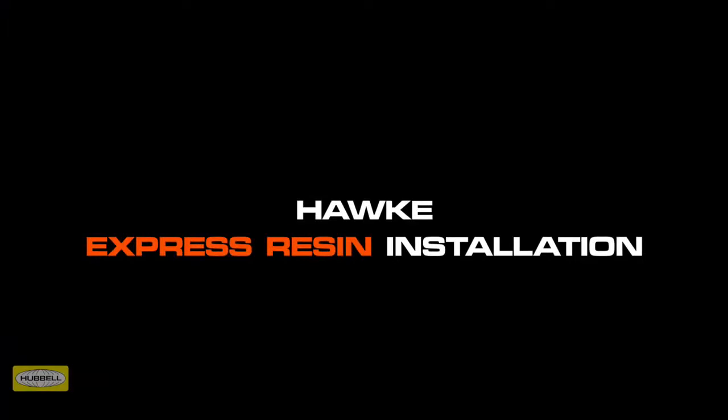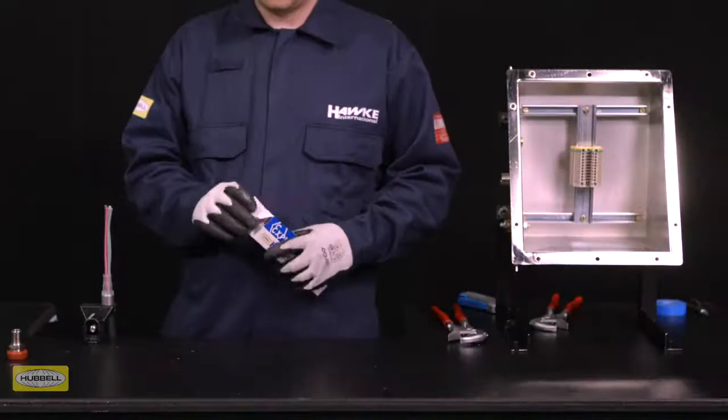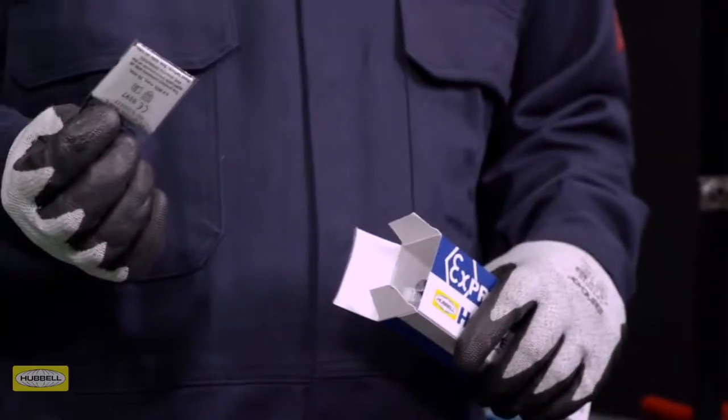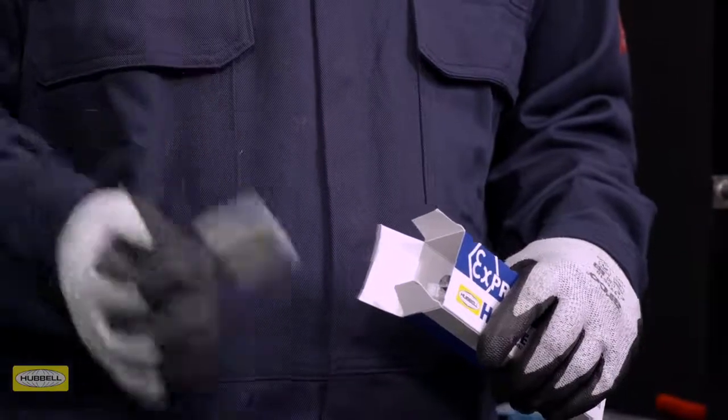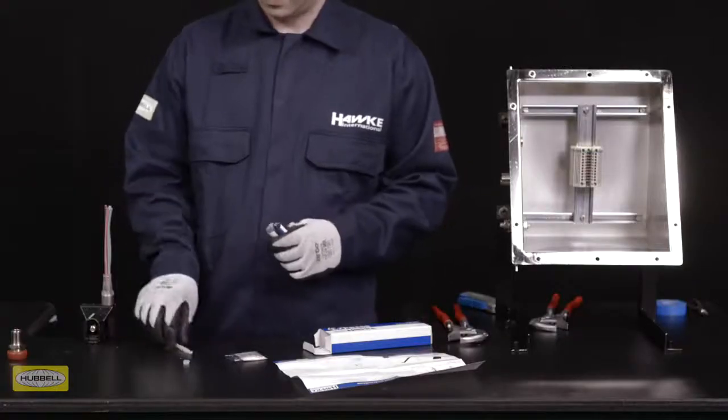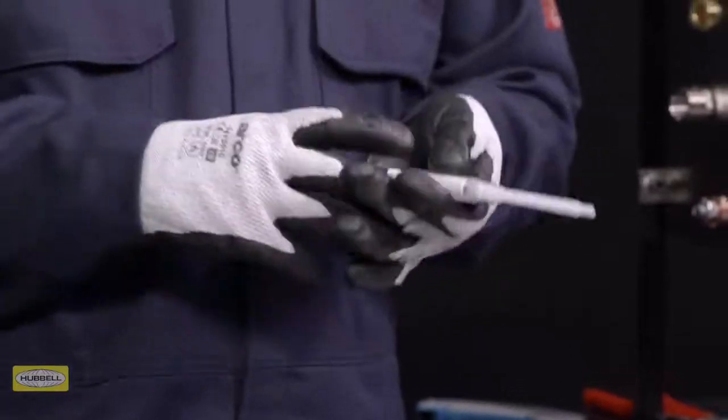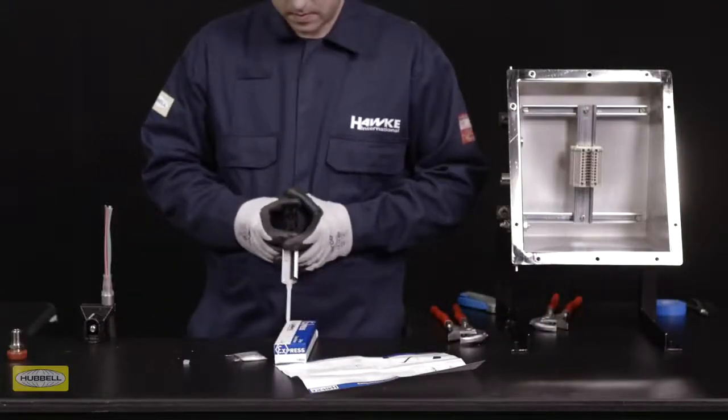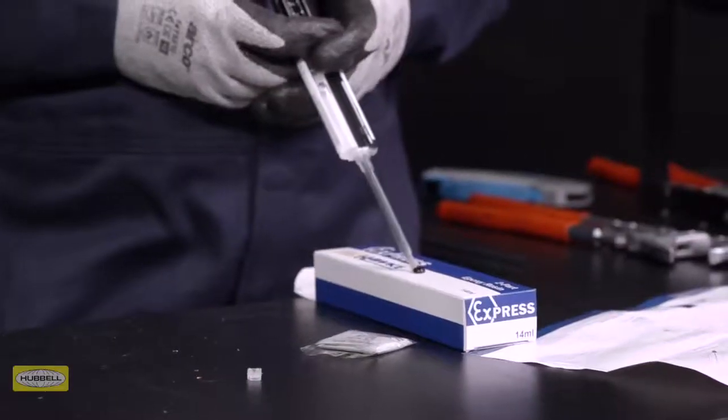Ensure gloves are worn throughout the filling process; they are supplied with the resin as standard. Snap off or unscrew the cartridge lid and fit the nozzle. Purge approximately 25 millimeters or one inch of resin onto a disposable surface to ensure the resin is properly mixed.